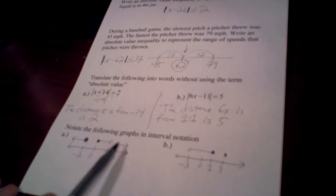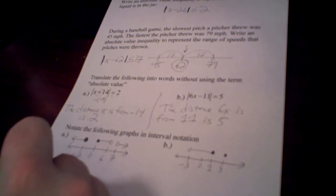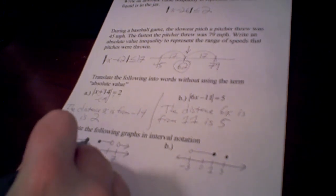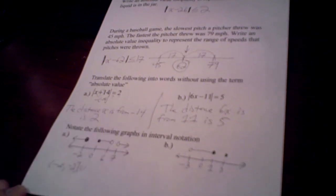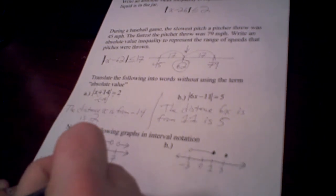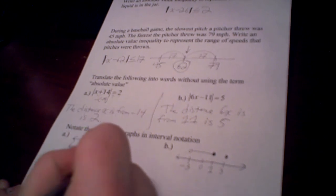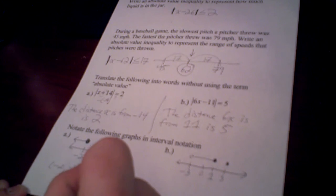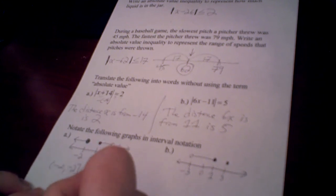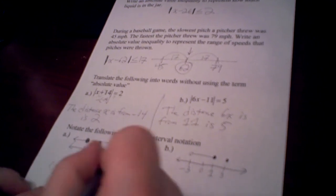So on this one, the smallest x could be, translating this graph, would be negative infinity. Up until and including negative 2, then it hops. Anytime there's a hop, I'll use a union sign. Then including 0, up to 6, not including 6. Then another hop, so another union sign. And then from 7 until infinity.